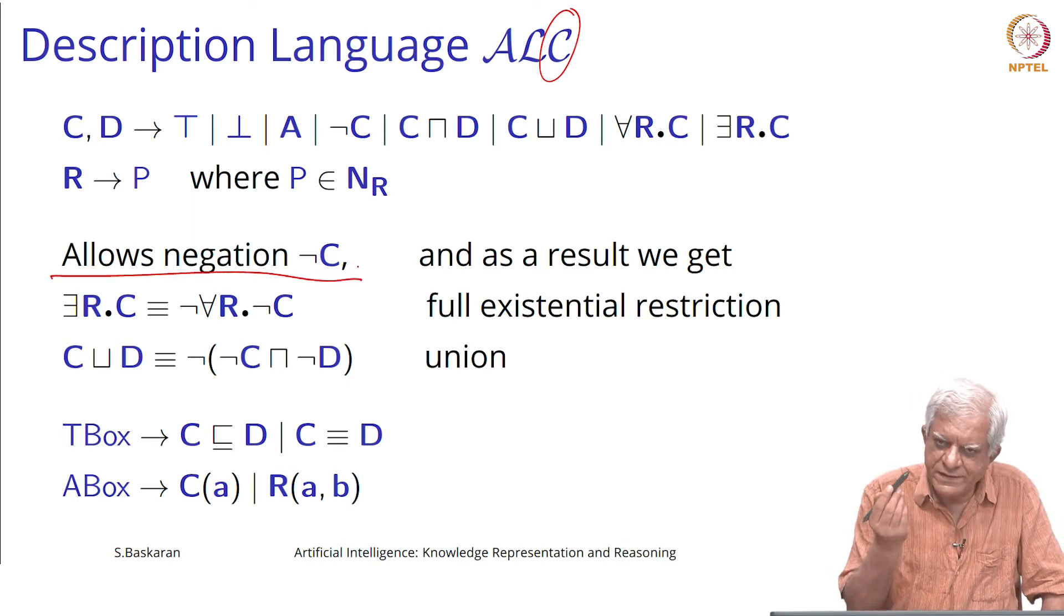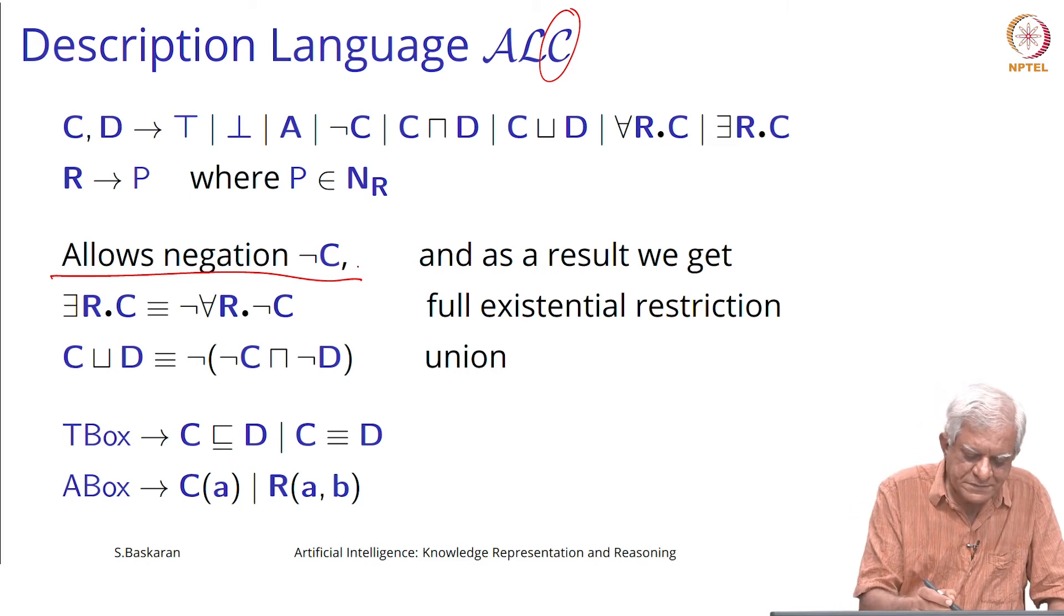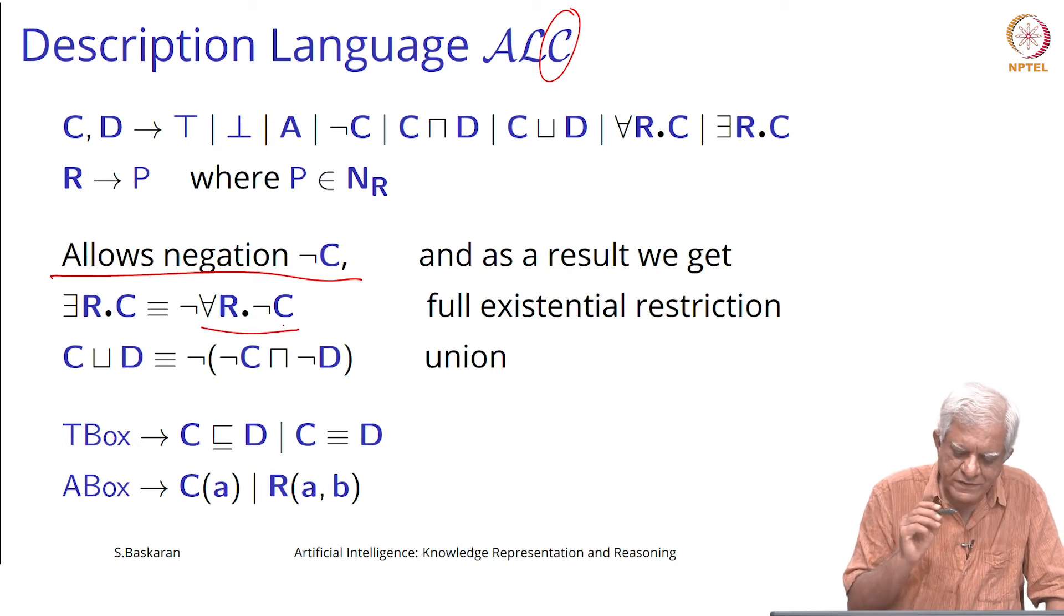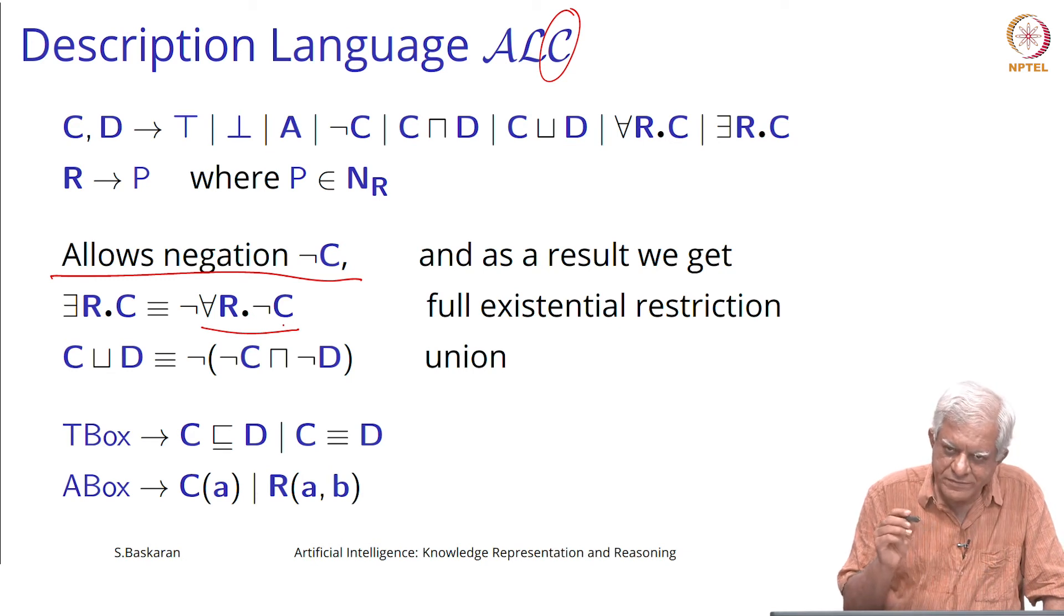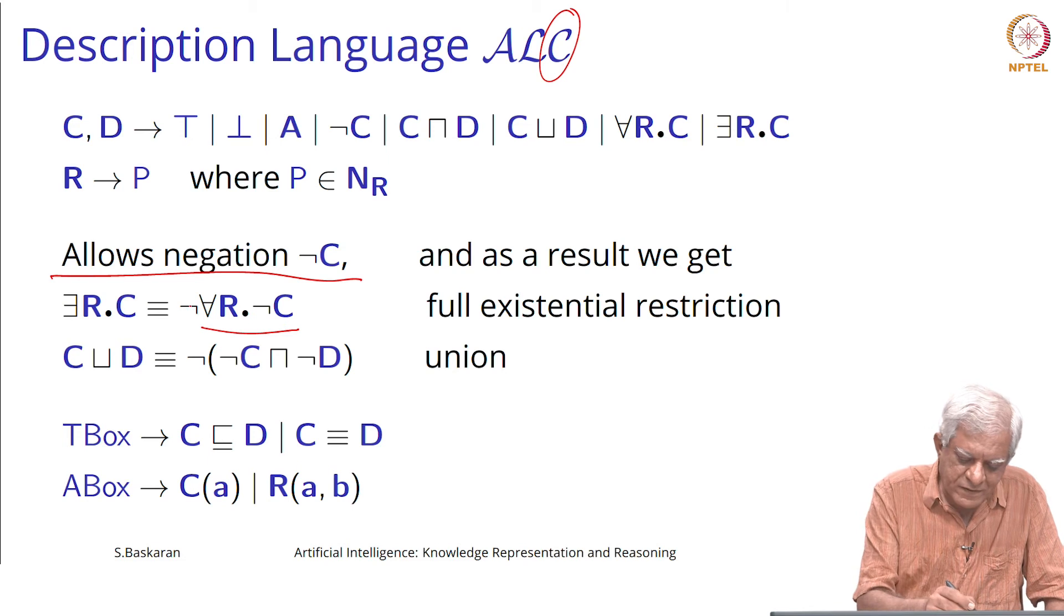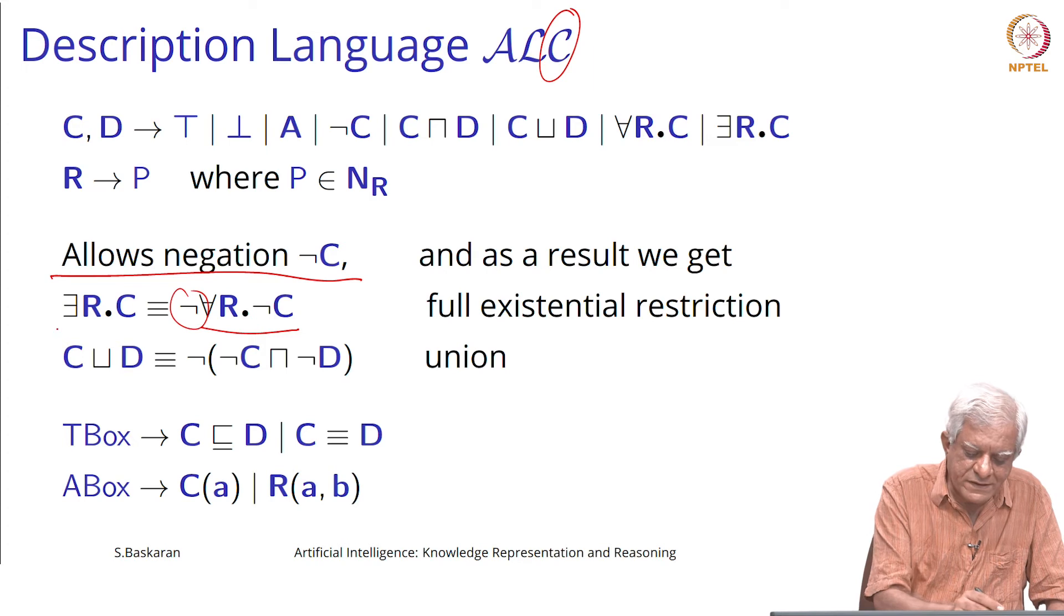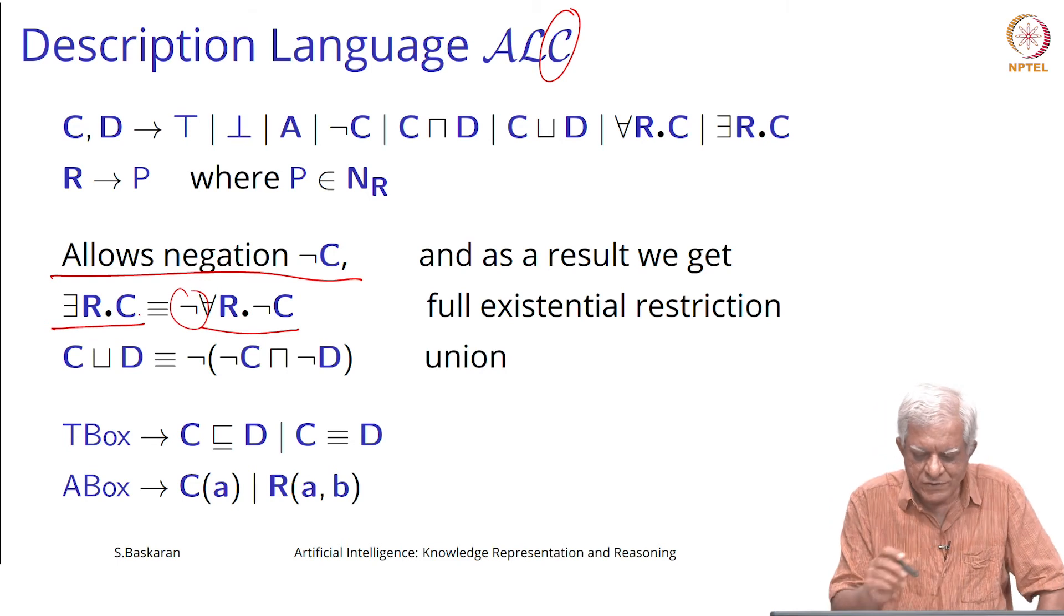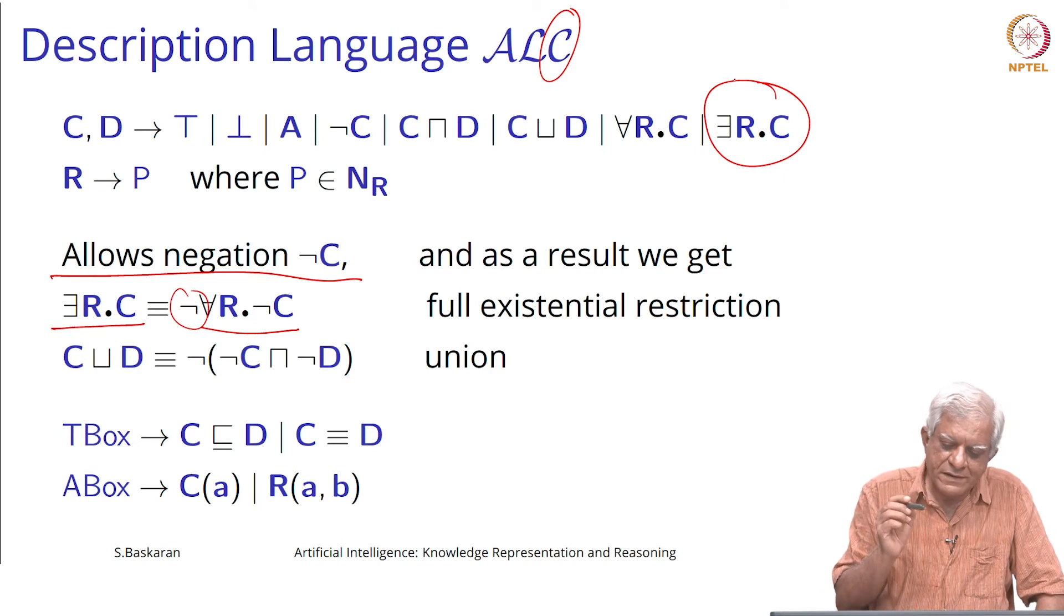This allows negation of any concept, not necessarily only atomic concept. As a result of which, if we take this concept which is allowed even in AL, that all role fillers must be from the complement of C, and we put a negation outside there, then you should work out and see that this is equivalent to saying that there exists at least one role filler who comes from a class C. This is a new thing in ALC.